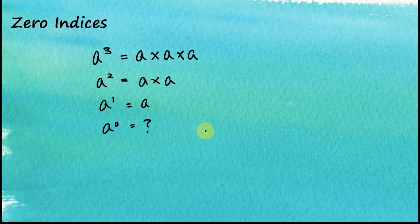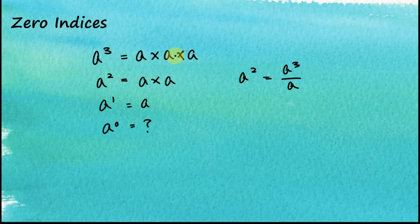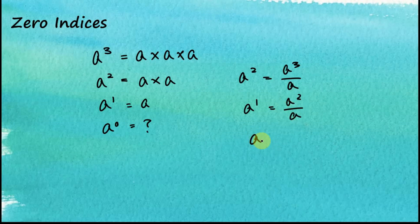Now from here we can see that a squared is equal to a cubed divided by a. A cube is a times a times a, and after we divide it by a, they become a times a — that's a squared. So a squared equals a cubed divided by a, and a to the power of 1 is equal to a squared divided by a. Therefore we can deduce that a to the power of 0 is equal to a to the power of 1 divided by a, and this is equal to 1.